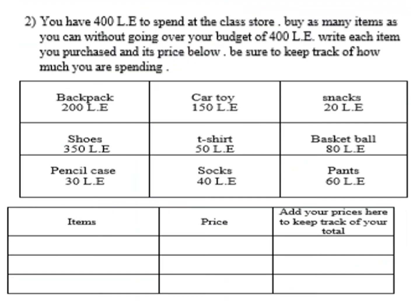Now open your booklet. You have 400 pounds to spend at the class store. Buy as many items as you can without going over your budget of 400 pounds. Items available: bag for 200 pounds, car toy 150 pounds, snacks 20 pounds, shoes 350 pounds, t-shirt 50 pounds, basketball 80 pounds, pencil case 30 pounds, socks 40 pounds, paints 60 pounds.